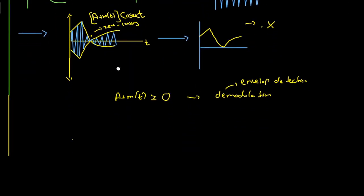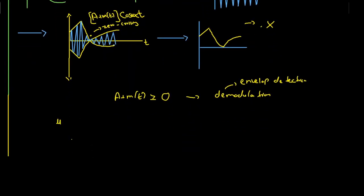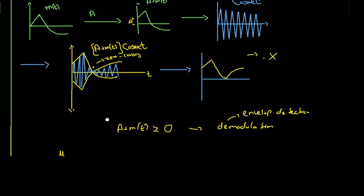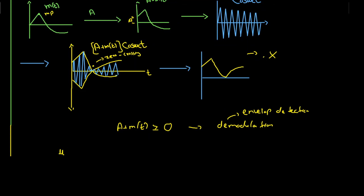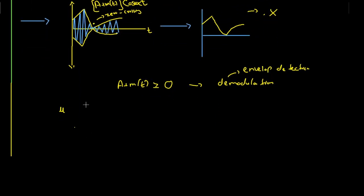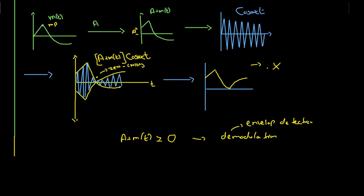Another important term is the modulation index, represented by μ. If the maximum amplitude of the message signal is mp, then the modulation index is μ = mp / A. Since (A + m(t)) ≥ 0 requires A ≥ mp, the modulation index satisfies 0 ≤ μ ≤ 1. This is for the case when the message signal is symmetric, i.e., its maximum amplitude is mp and minimum is −mp.